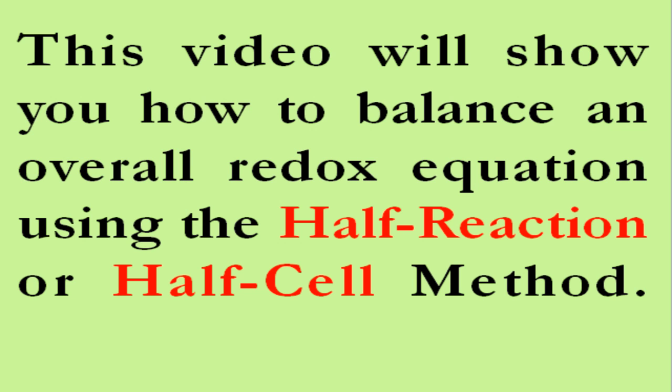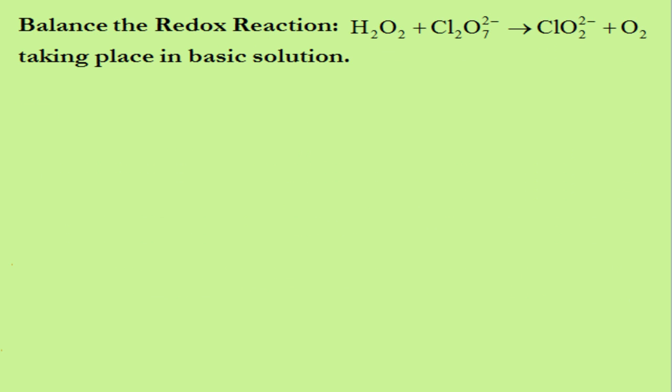There are several different methods available to balance redox equations. The easiest one uses half-reactions. This video will show you how to use the half-reaction method. We'll illustrate this by going through an example: balance the equation H₂O₂ plus Cl₂O₇²⁻ forms ClO₂²⁻ plus O₂, taking place in basic solution.